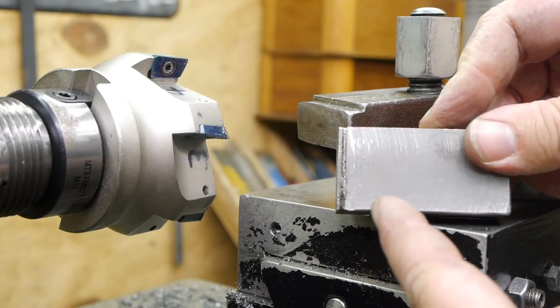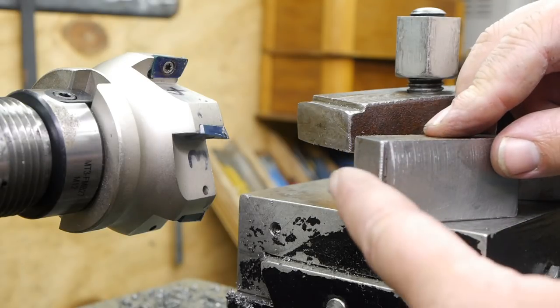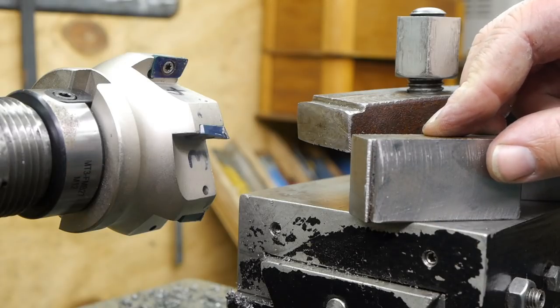I cleaned up this edge on the grinder and now I'm going to take a bit off on the end here to remove the saw blade cut.